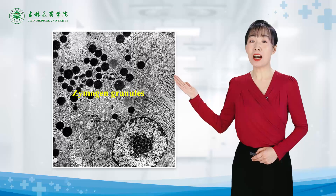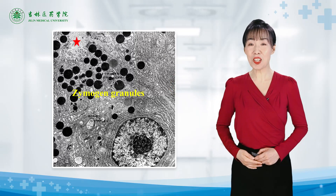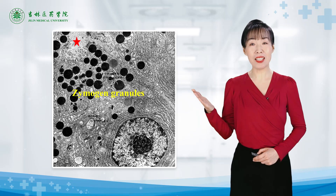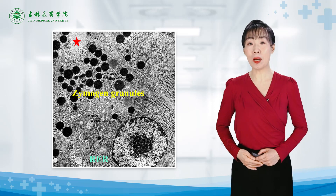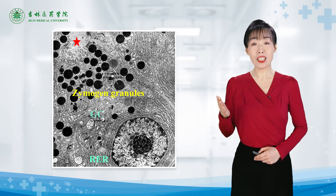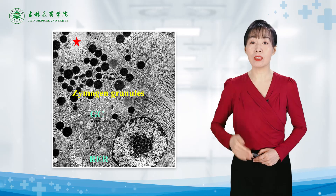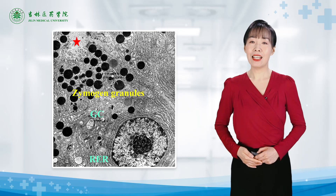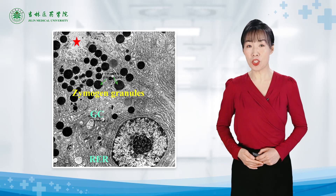This is an electron micrograph of a serous cell. The star shows the lumen of the acinus. You may observe numerous cisternae of rough endoplasmic reticulum near the base of the cell. The Golgi complex is situated at the apical pole of the nucleus. The apical portion of the cytoplasm is full of mature zymogen granules.